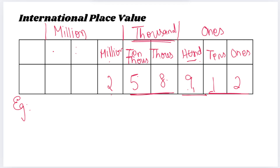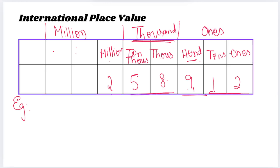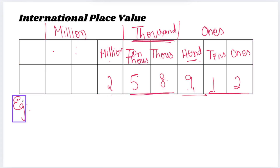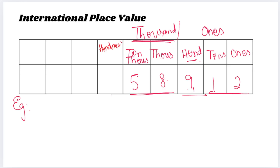We have already seen the international place value system, which includes ones, tens, hundreds, and thousands. After ten thousand, there is also hundred thousand — I forgot to mention that. So the correct order is: thousand, ten thousand, then hundred thousand.